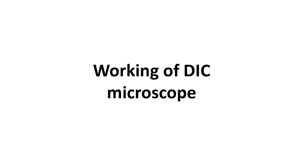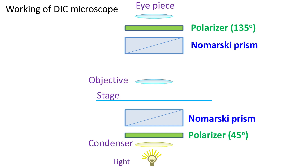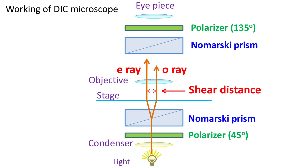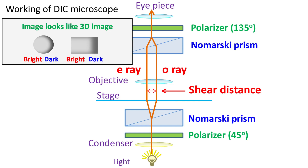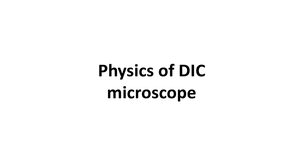Now let's see the working of the DIC microscope. The light from the condenser enters the polarizer and gets split into E ray and O ray by the Nomarski prism. The distance between the E ray and O ray is also known as the shear distance. The E ray and O ray travel further through the specimen and encounter the second Nomarski prism, which combines them back into a single ray. This ray then passes through the analyzer and finally the eyepiece. The resulting image looks like a 3D image where one side is bright while the other is dark, even though in reality light only hits the specimen from the bottom.